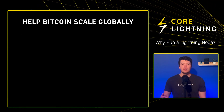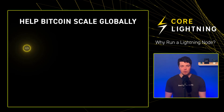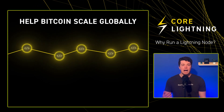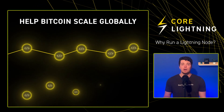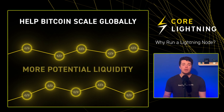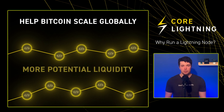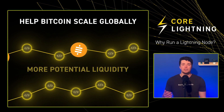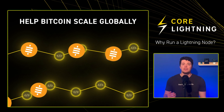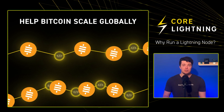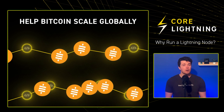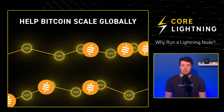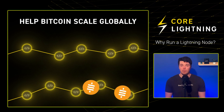Third: contribute to the Lightning Network and help Bitcoin scale globally. The more nodes operating on the network, the more channels can be opened with more potential liquidity, which can allow larger payments to be routed. This helps build financial infrastructure for emerging economies and strengthens the overall resilience of the network.